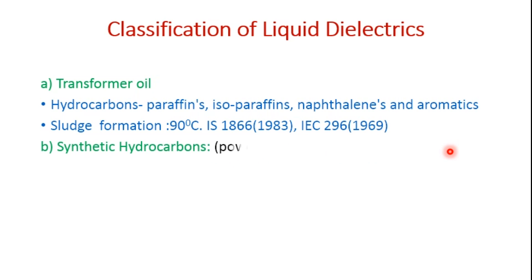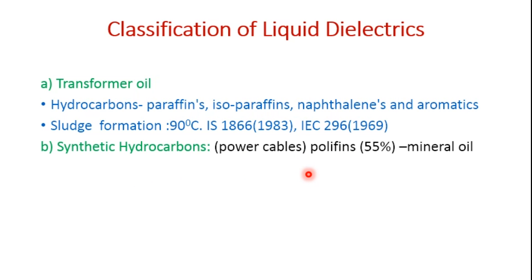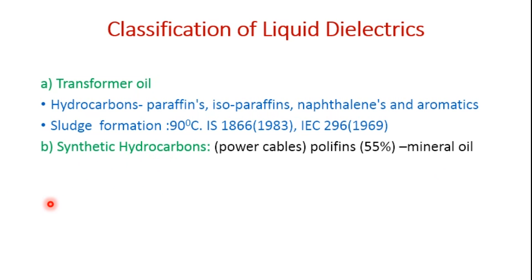The second type is synthetic hydrocarbons, which are used generally in power cables. Polyolefins are the dielectric of choice for applications in power cables — over 55% of the synthetic hydrocarbons produced worldwide are polyolefins. These exhibit the same properties as mineral oil.